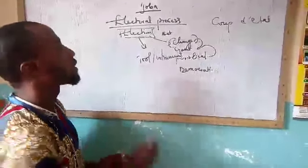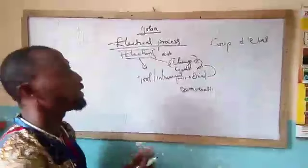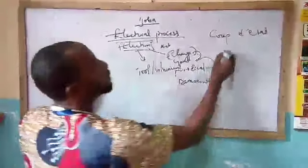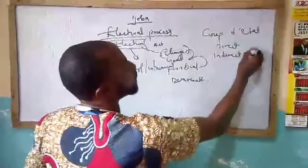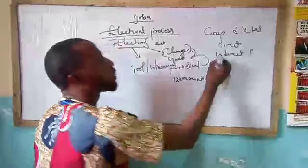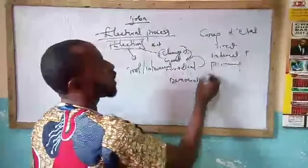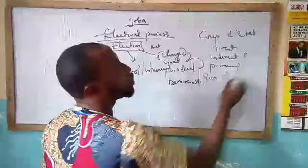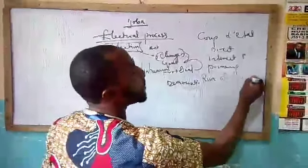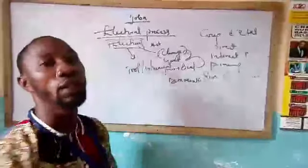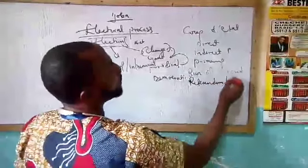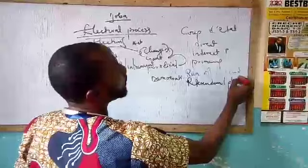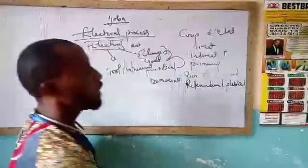Now looking at the typologies of election, we have what is referred to as the direct election, the indirect election, the primary election, the runoff election (also called second balloting), the referendum and the plebiscite, and the by-election.